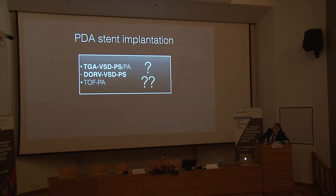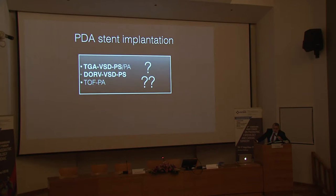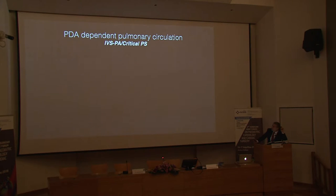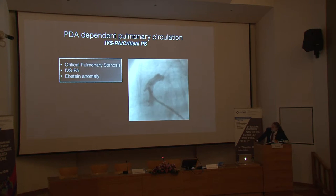In patients with two ventricles — such as TGA with previous systemic-to-pulmonary shunts or pulmonary atresia — PDA stenting may also have a role. In tetralogy of Fallot with pulmonary atresia, I usually send patients to surgery for a BT shunt, or if there is a main pulmonary artery close to the heart, I prefer a hybrid approach in the operating room where we perforate the valve and place a stent without going on bypass — a nice RVOT reconstruction allowing extubation the next day.